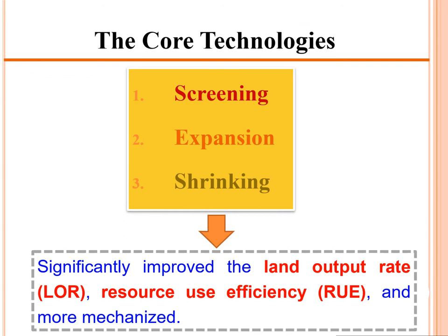There are two types of technologies: core technologies and supporting technologies. The core technologies include screening, expansion, and shrinking. All these technologies significantly improve land output rate, resource use efficiency, and enable greater mechanization.